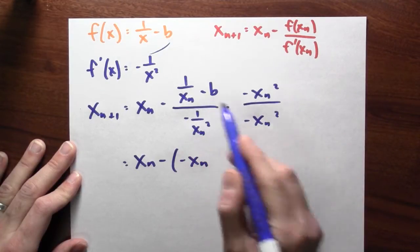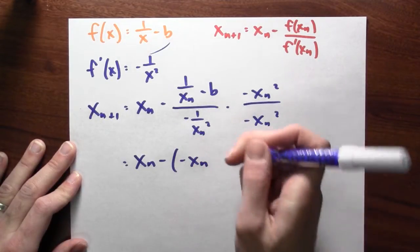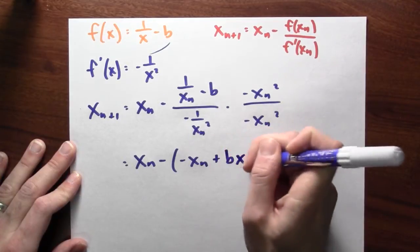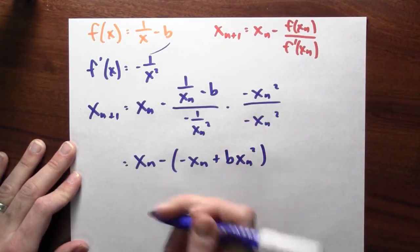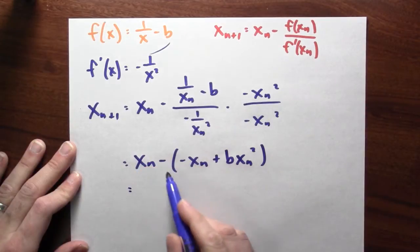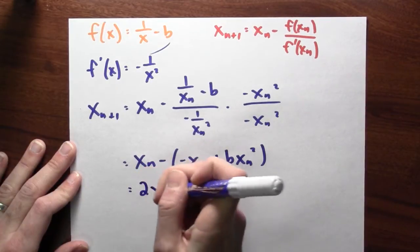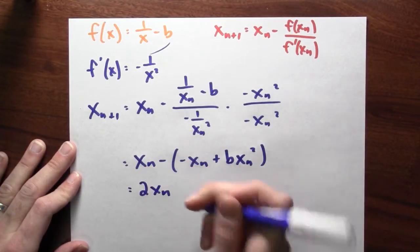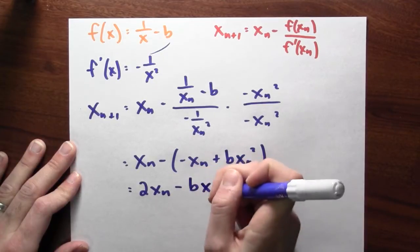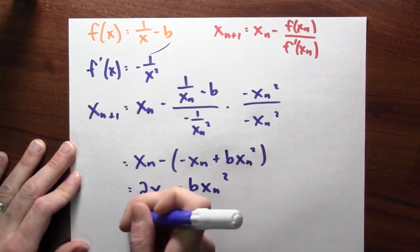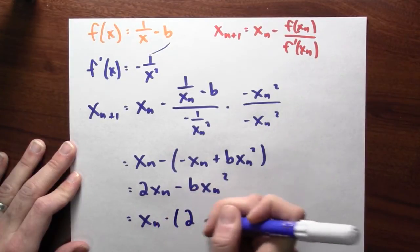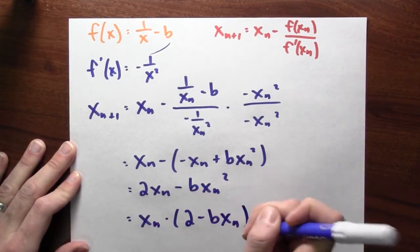And I've got a negative b negative x sub n plus x sub n, that's 2 x sub n's, minus b x sub n squared. And I'll factor out an x sub n. So x sub n times 2 minus b x sub n.